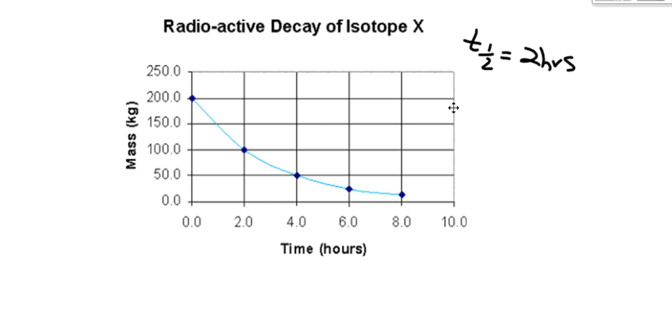So that means every two hours, half of this element would then disappear, or radioactively decay. So let's test that theory. So now I have 100 kilograms. And if I divide that by two, I get 50. And I go over here, that's four total hours that it took. So that's two more hours there. So four hours would be two half-lives.